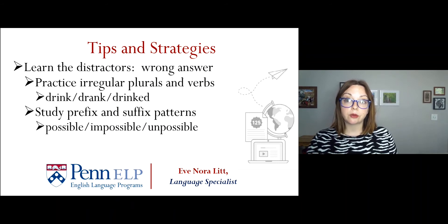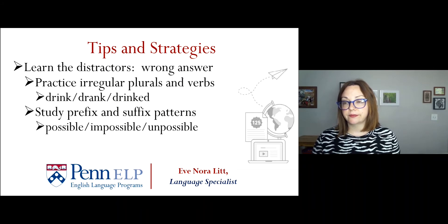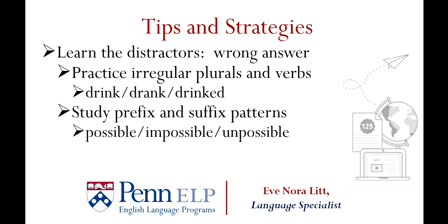Another type of distractor or wrong answer is words with the wrong prefix or suffix. Here's an example: the word possible means that something is able to be done. If we want to use a prefix to show that something is not possible, which letter should we add to the beginning of that word? For this particular word, the prefix that means not is im-. Something that is impossible means it cannot be done. So, a distractor could be a word like un-possible, dis-possible, or anti-possible.